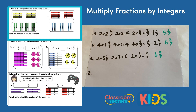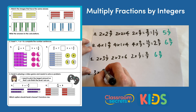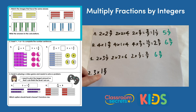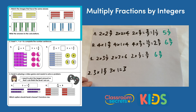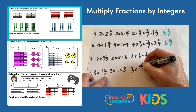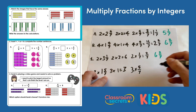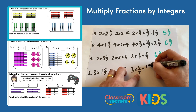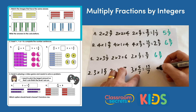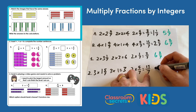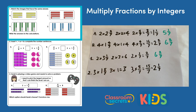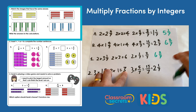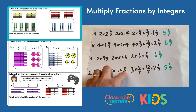Looking at image two, we have three lots of one and five sevenths. Three times one is three, and then multiplying the fraction: three lots of five sevenths, so three multiplied by five is fifteen sevenths. Converting fifteen sevenths to a mixed number gives two and one seventh. Adding to the whole number result: three add two and one seventh gives five and one seventh, which matches a.